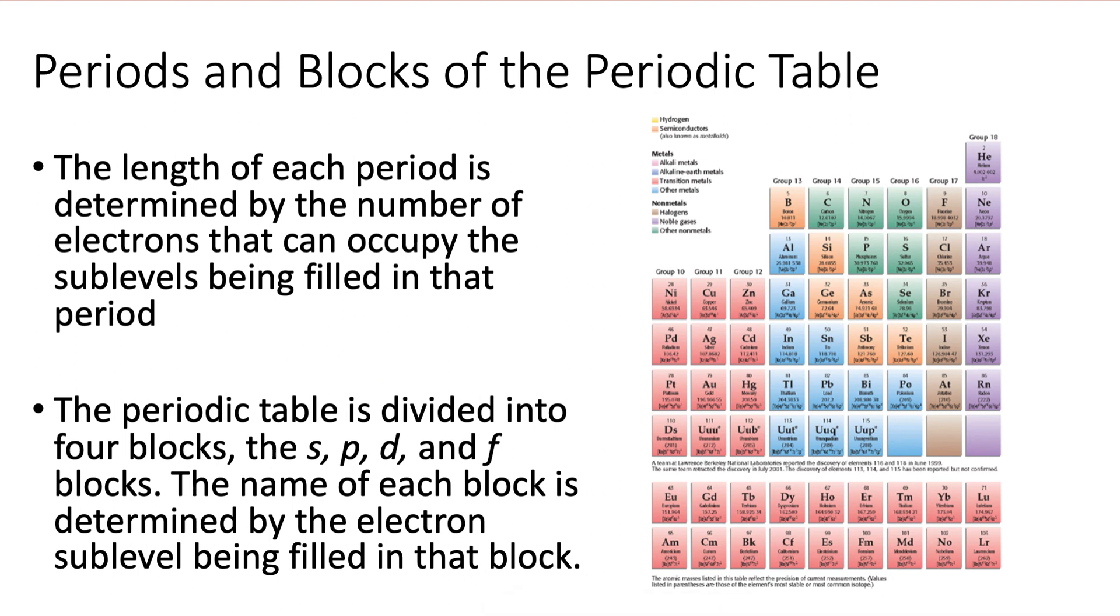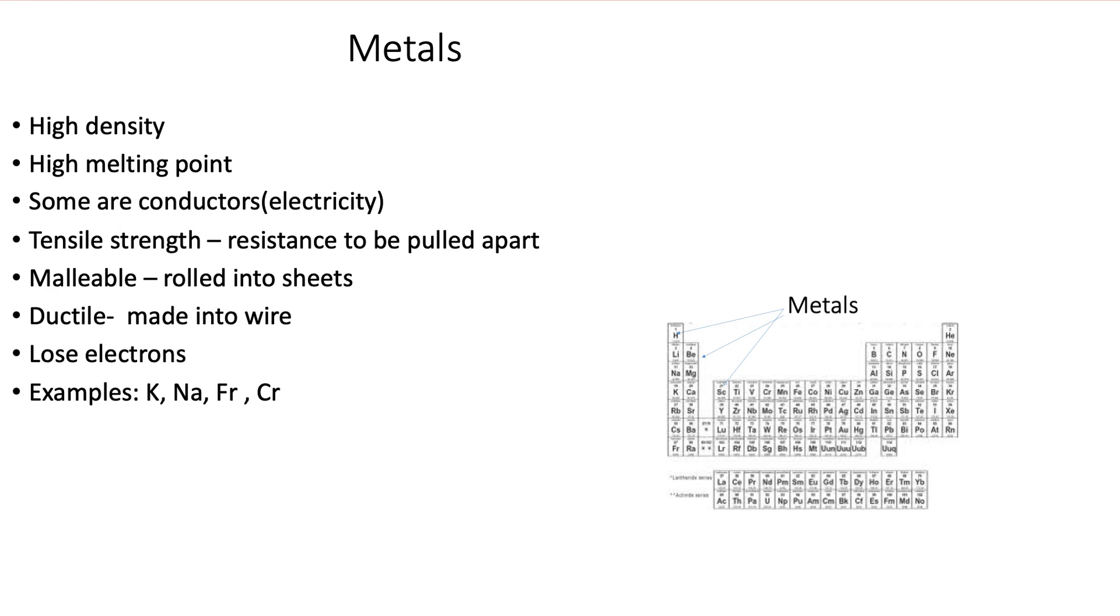And we also know from the second unit, matter and change, the periodic table is broken down into three subcategories. First one is metals.